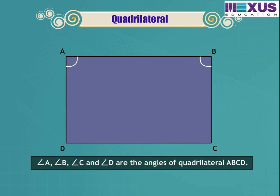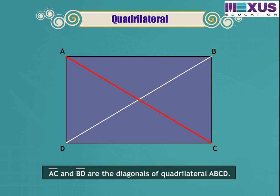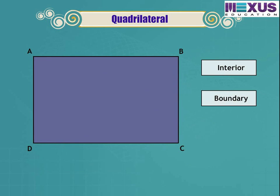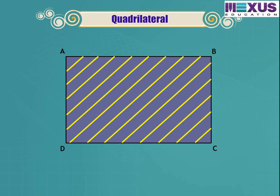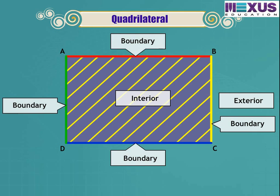Angle A, angle B, angle C, and angle D are its four angles. The line segments joining opposite vertices — AC and BD — are called its diagonals. A quadrilateral also divides a plane into three parts: interior, boundary, and exterior. The shaded part is the interior of quadrilateral ABCD, while the unshaded part is the exterior, and segments AB, BC, CD, and DA together form its boundary.